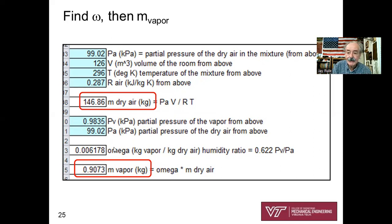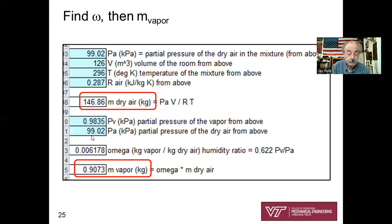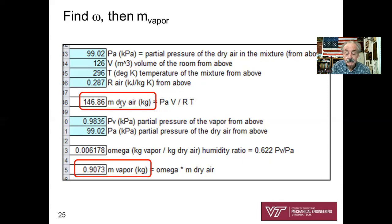Next, calculate omega, the humidity ratio: 0.622 times P-vapor divided by P-dry-air gives omega = 0.006178. Omega is a small number because atmospheric air is mostly dry air with a little bit of vapor. Multiplying omega by the mass of dry air gives the mass of vapor: 0.9 kilograms of vapor.